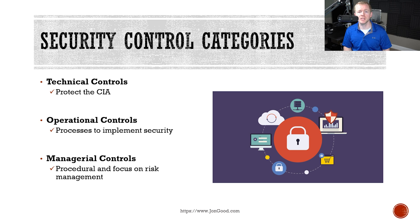First, we have technical controls that use some kind of technology to protect one or more of the components of the CIA triad — confidentiality, integrity, and availability. Think of something like firewalls or encryption.